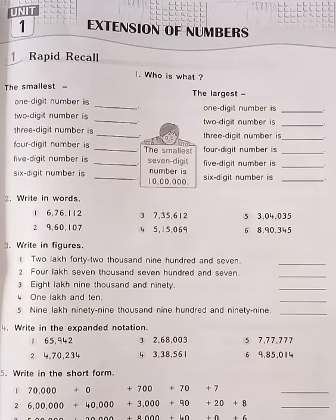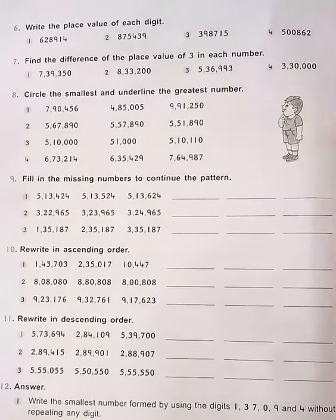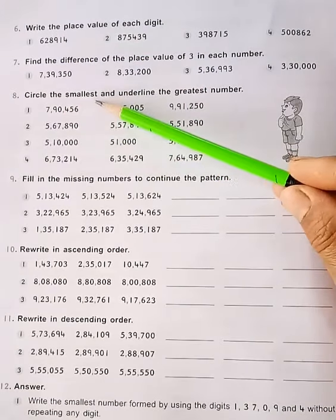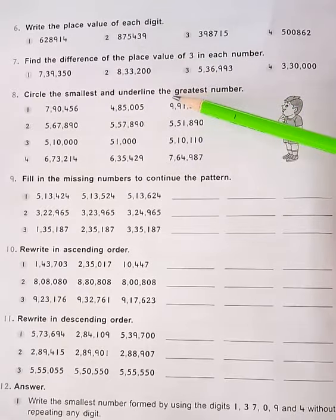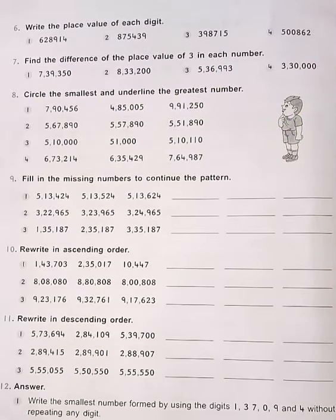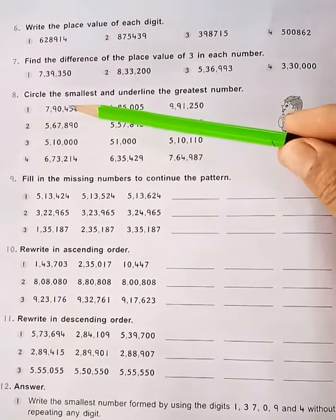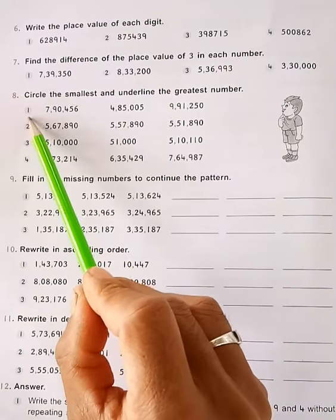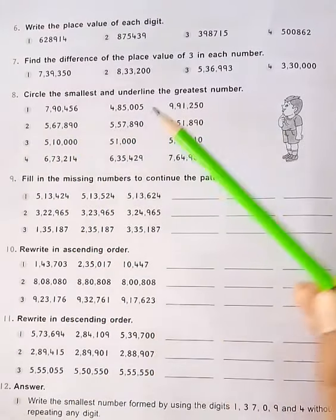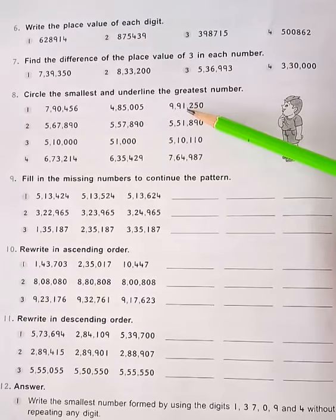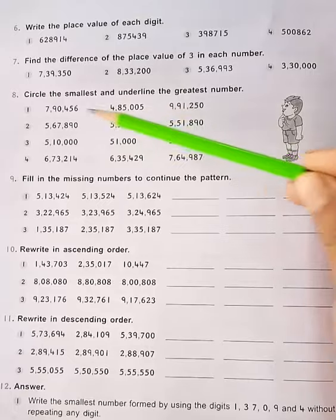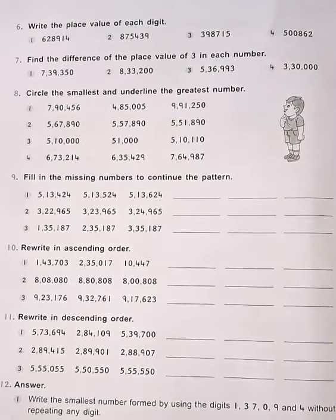This is from Unit 1, Extension of Numbers, Question Number 8: Circle the smallest and underline the greatest number. Many numbers are given here. In the first problem, three numbers are given. You have to circle the smallest number and underline the greatest number among these three numbers.